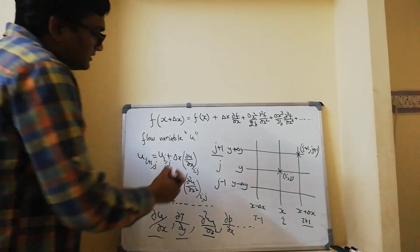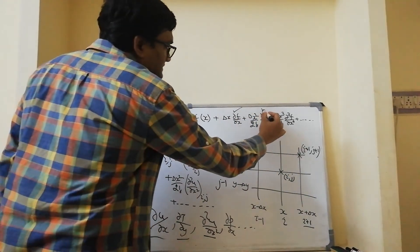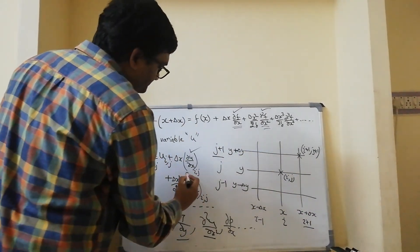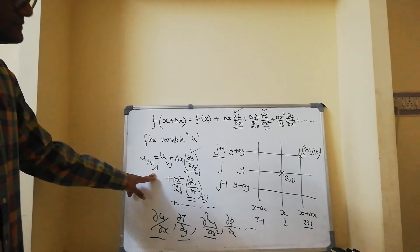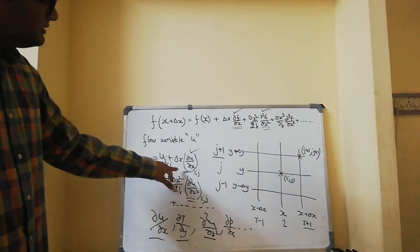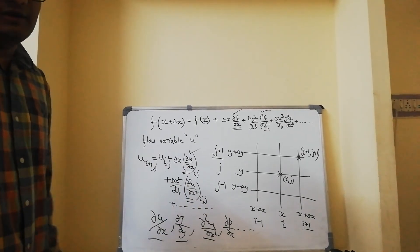We are interested in finding out this term or this term and this term. These are what we need. We will manipulate this equation, this expression in such a way, that we will get some plausible approximations for dou u by dou x and dou square u by dou x square.